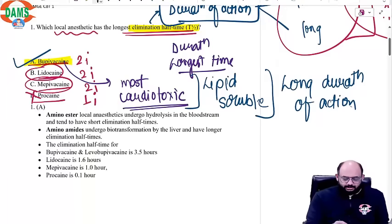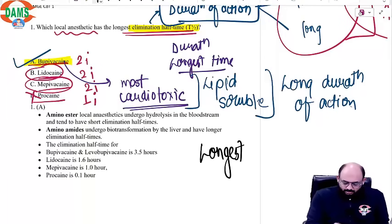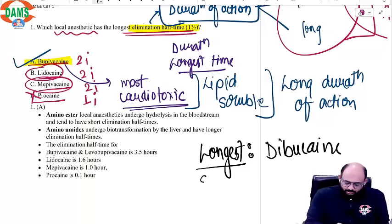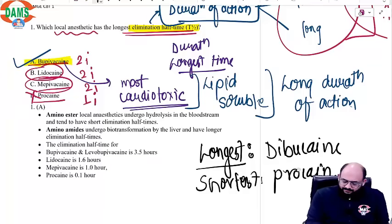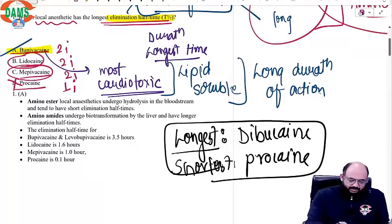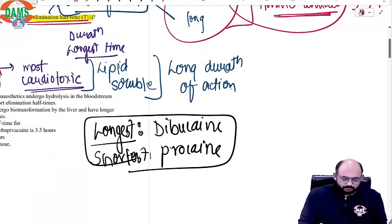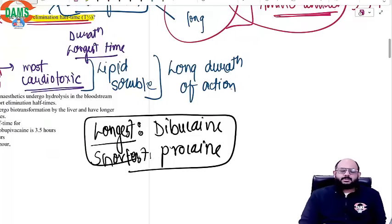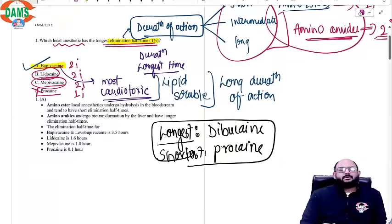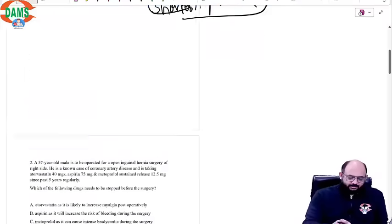Although theoretically, the longest-acting local anesthetic is dibucaine, while the shortest is procaine. So remember: the longest is dibucaine and the shortest is procaine. That covers the first question that came in your CBT.